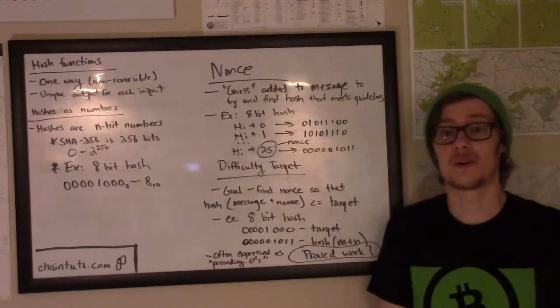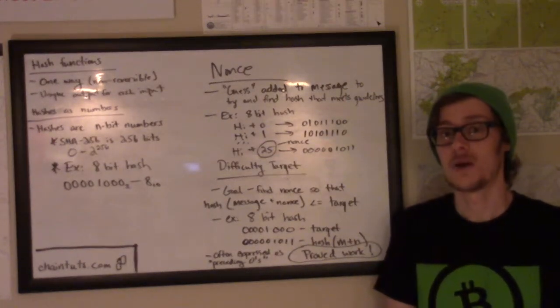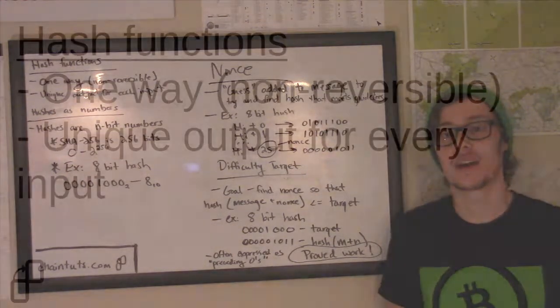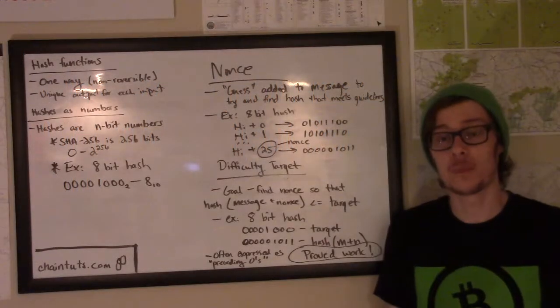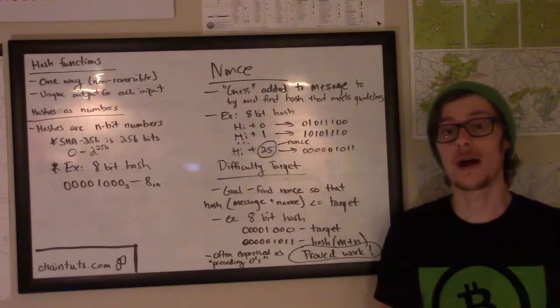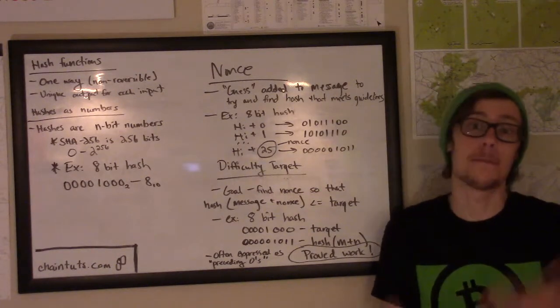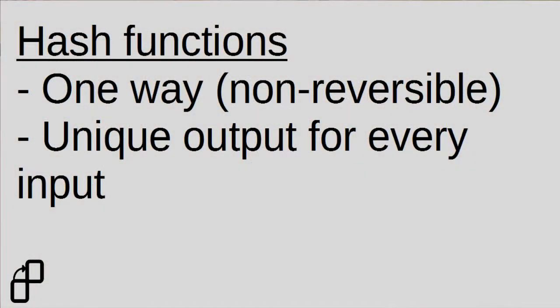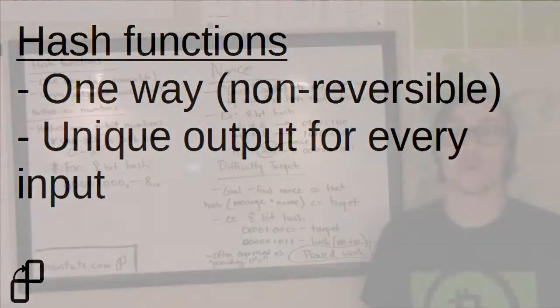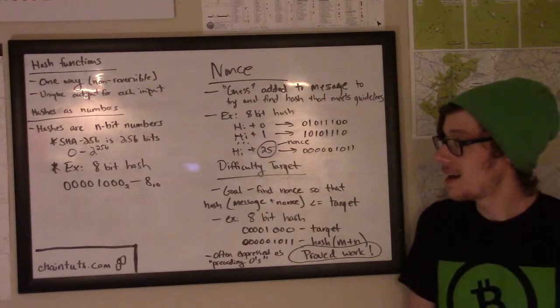Before we can discuss the technical in-depth parts of proof-of-work algorithms, we need to discuss a computer science concept called a hash function. A hash function is a one-way function, so it's non-reversible. Whenever you give an input to a hash function and it gives you an output, there's no algorithm that you can put that output into to get back the input that you started with. As well, hash functions have unique outputs for every input if they're well-written. So hello with an uppercase H would have a very different hash output than hello with a lowercase H.